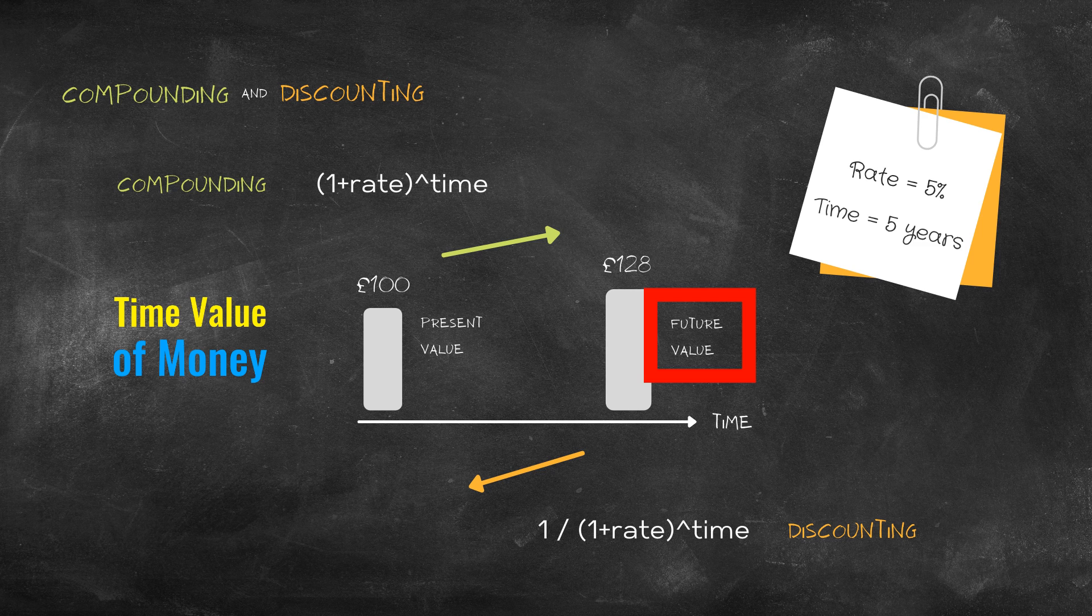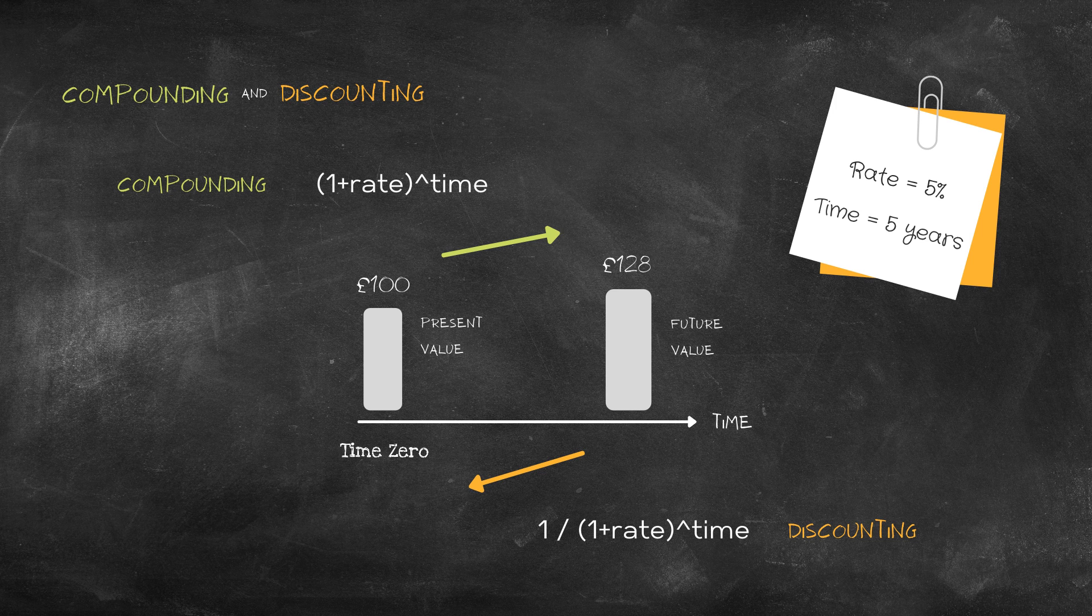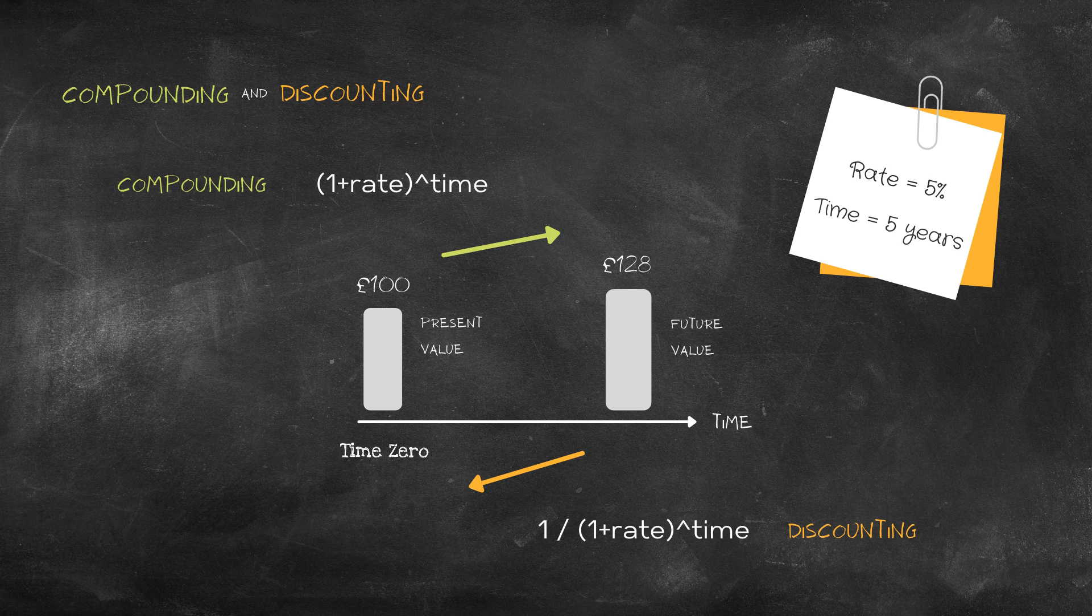What is particularly convenient about the present value is that it is a consistent point in time - time zero. You can calculate all your cash flows, whatever your project, however many cash flows there are, in terms of present value.